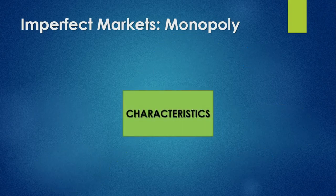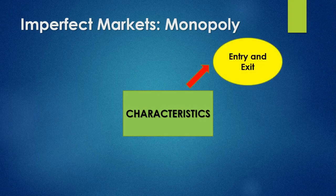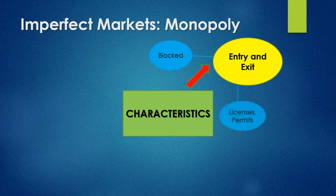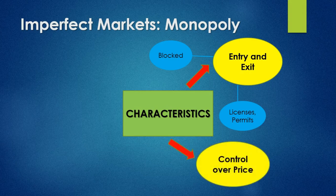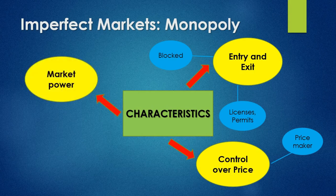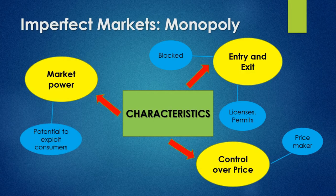Looking at entry and exit into a monopoly: it is a blocked system where you need some sort of license or permit to operate in this market, and it is very difficult to come by — therefore it is blocked. Control over price: because they are the only supplier of a good, they have complete control over the price and are able to influence it; therefore they are known as a price maker. And in terms of market power, because they are the only business, they have market power and are able to exploit consumers. These are the characteristics that make up the monopoly market.